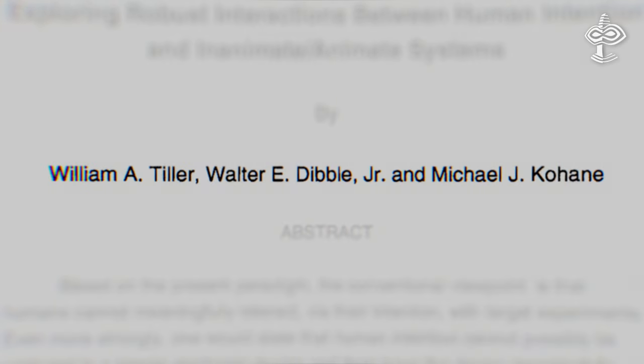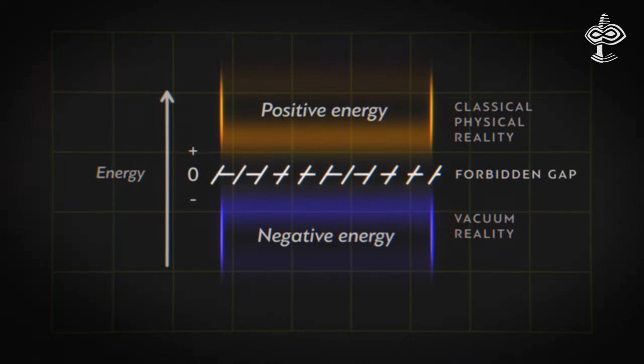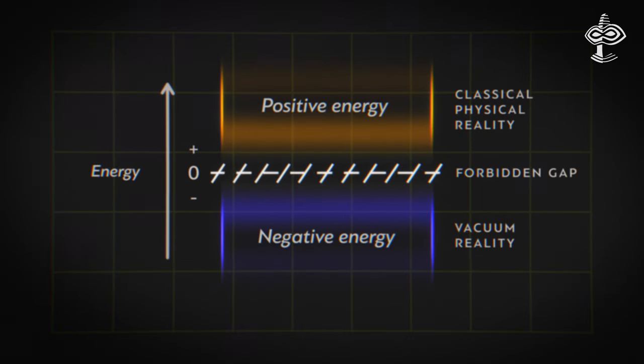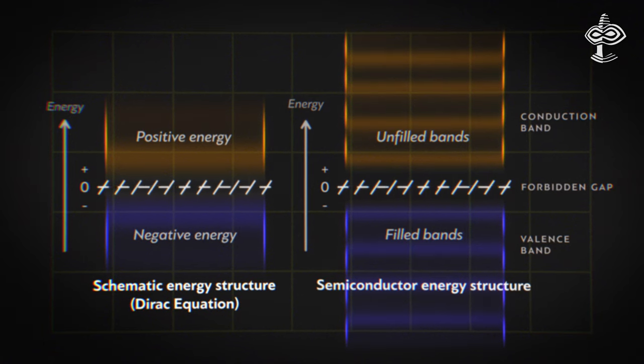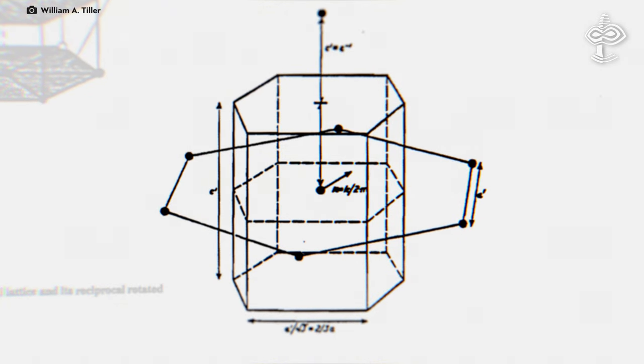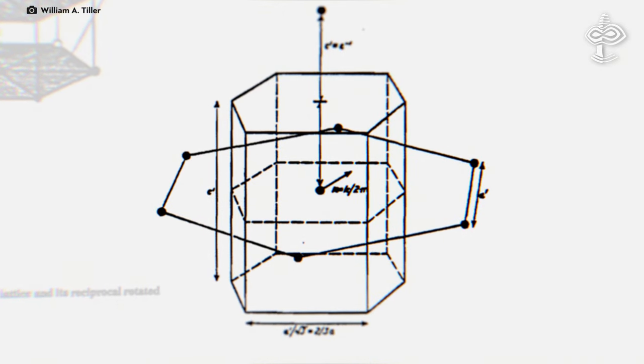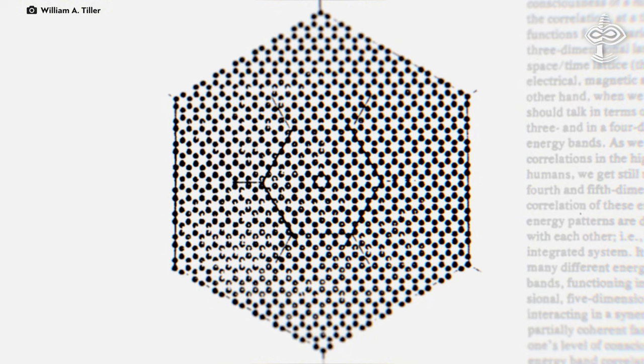It was Professor William Tiller who showed such alterations are possible in his experiments. Tiller points out that the vacuum structure suggested by Dirac is similar to the energy bands found in basic semiconductors, suggesting that from a material science perspective, the quantum vacuum can be thought of as having a structure like that of a perfect crystal.